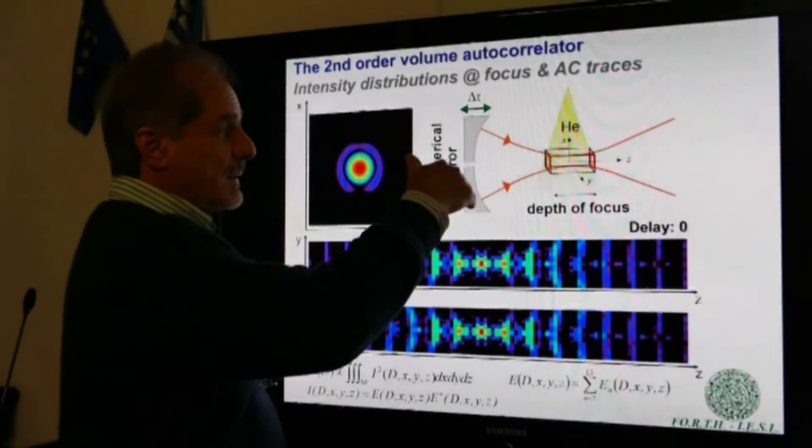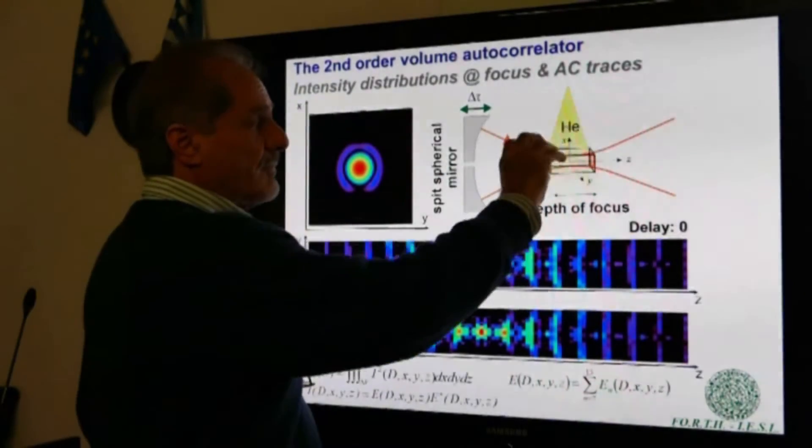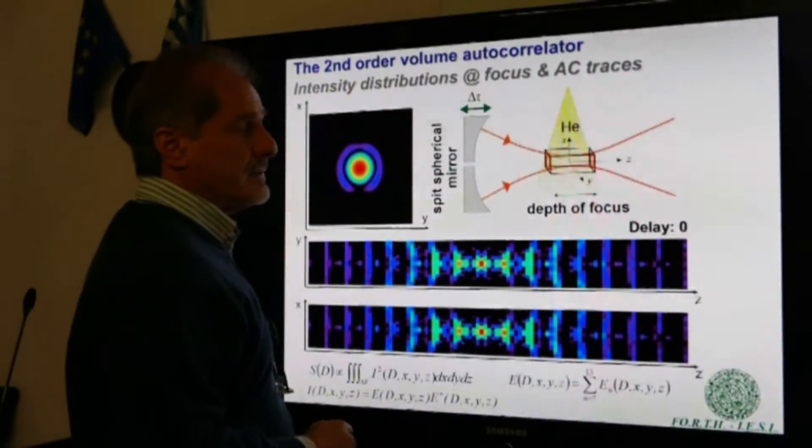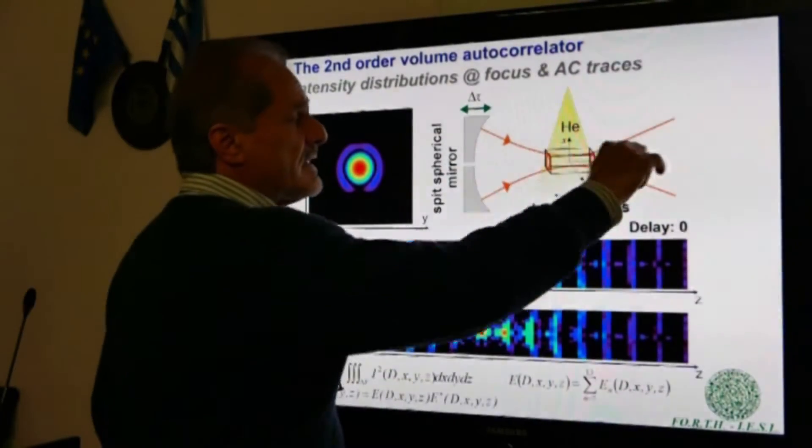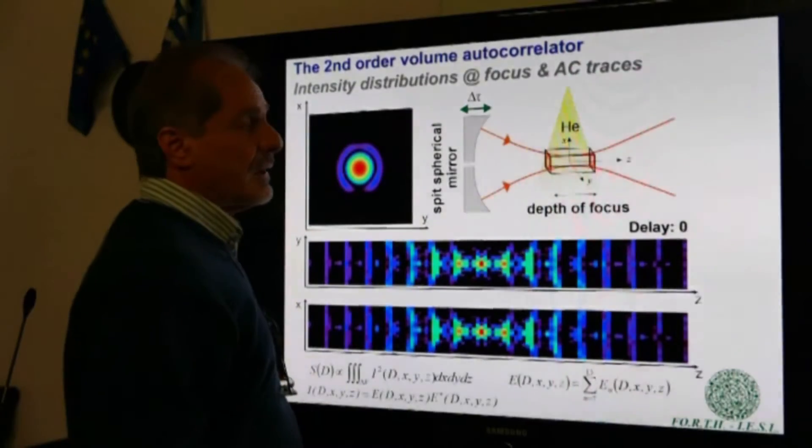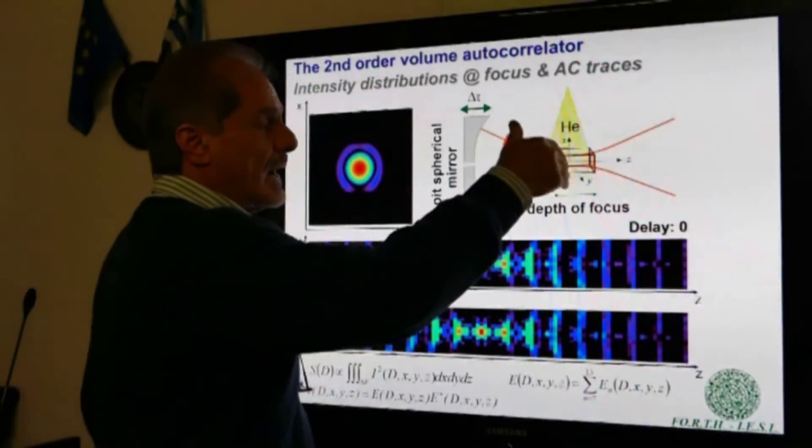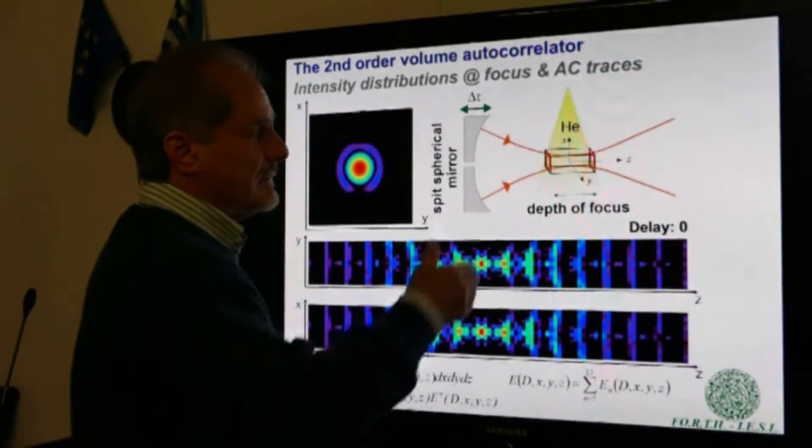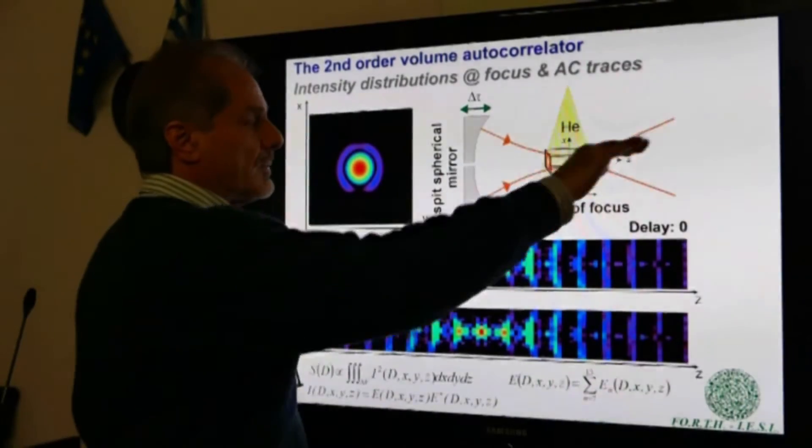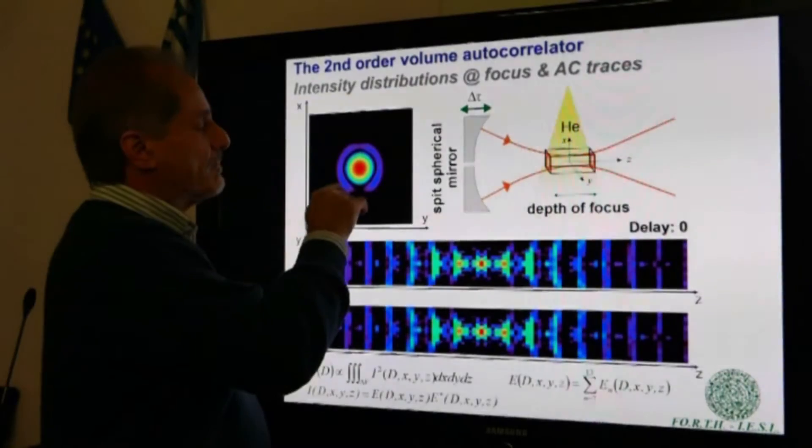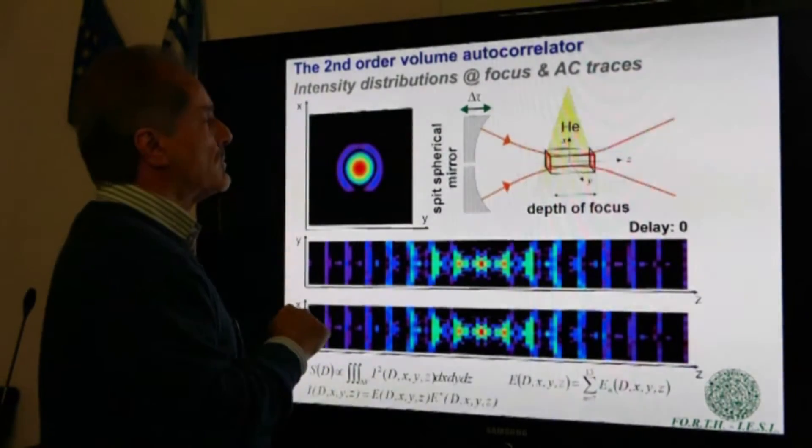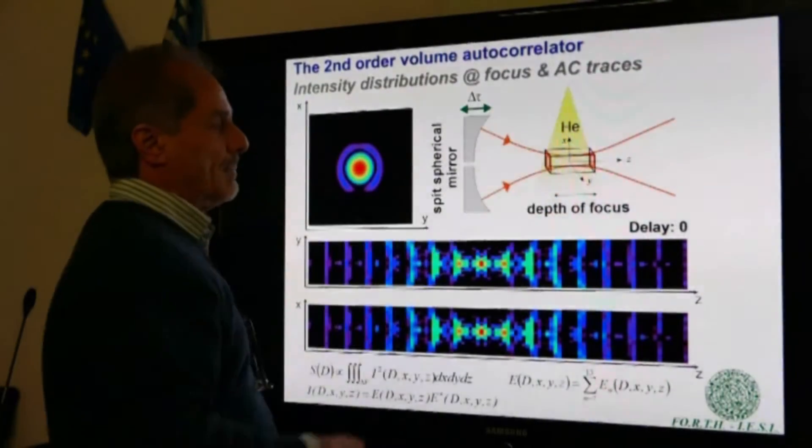Here we have again the split spherical mirror. Here is the volume where the ionization is produced in xenon, for instance. Z is the propagation axis of the XUV radiation and Y, XY is the plane perpendicular to the propagation. This is a calculated intensity distribution at this XY plane.